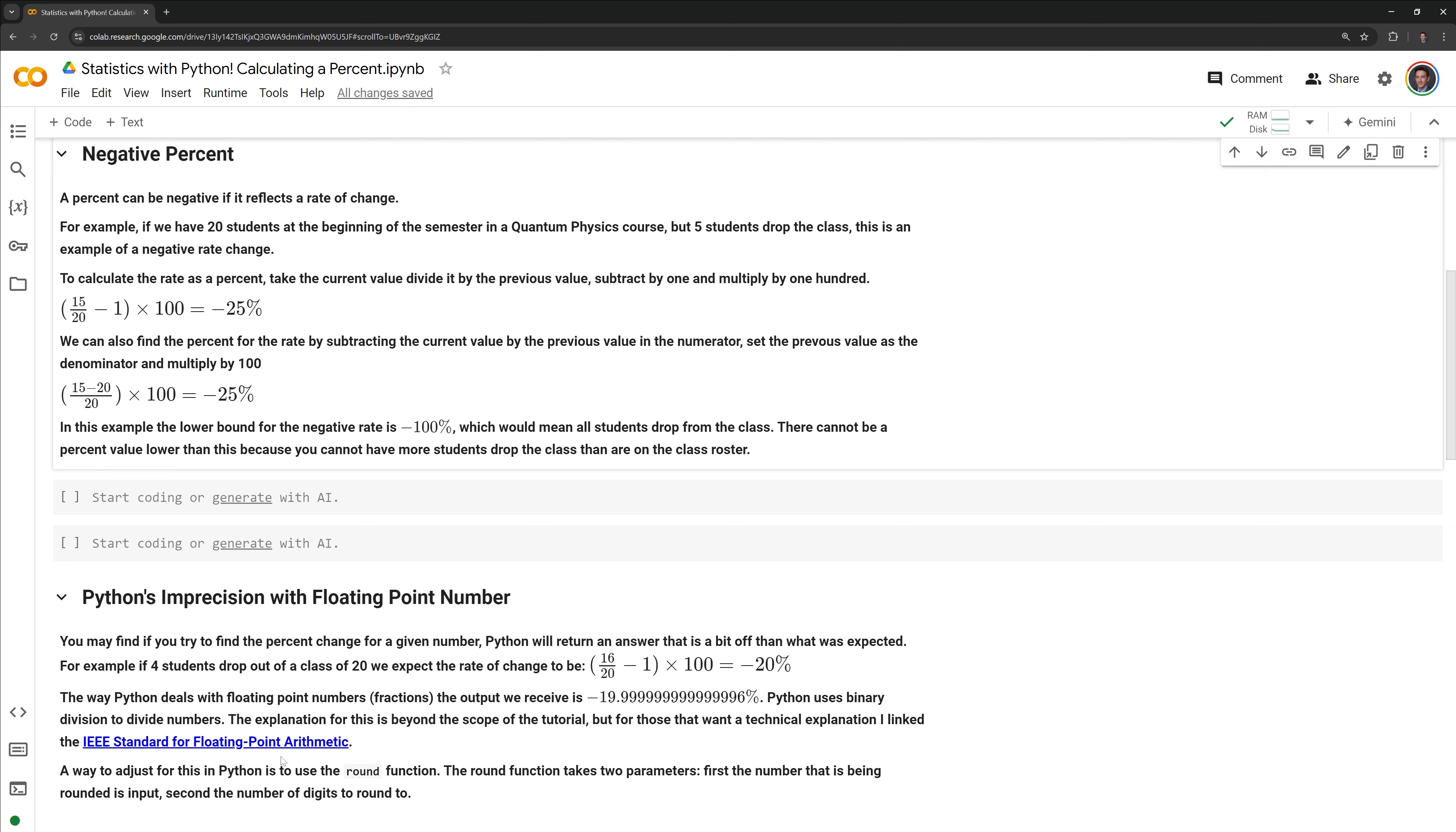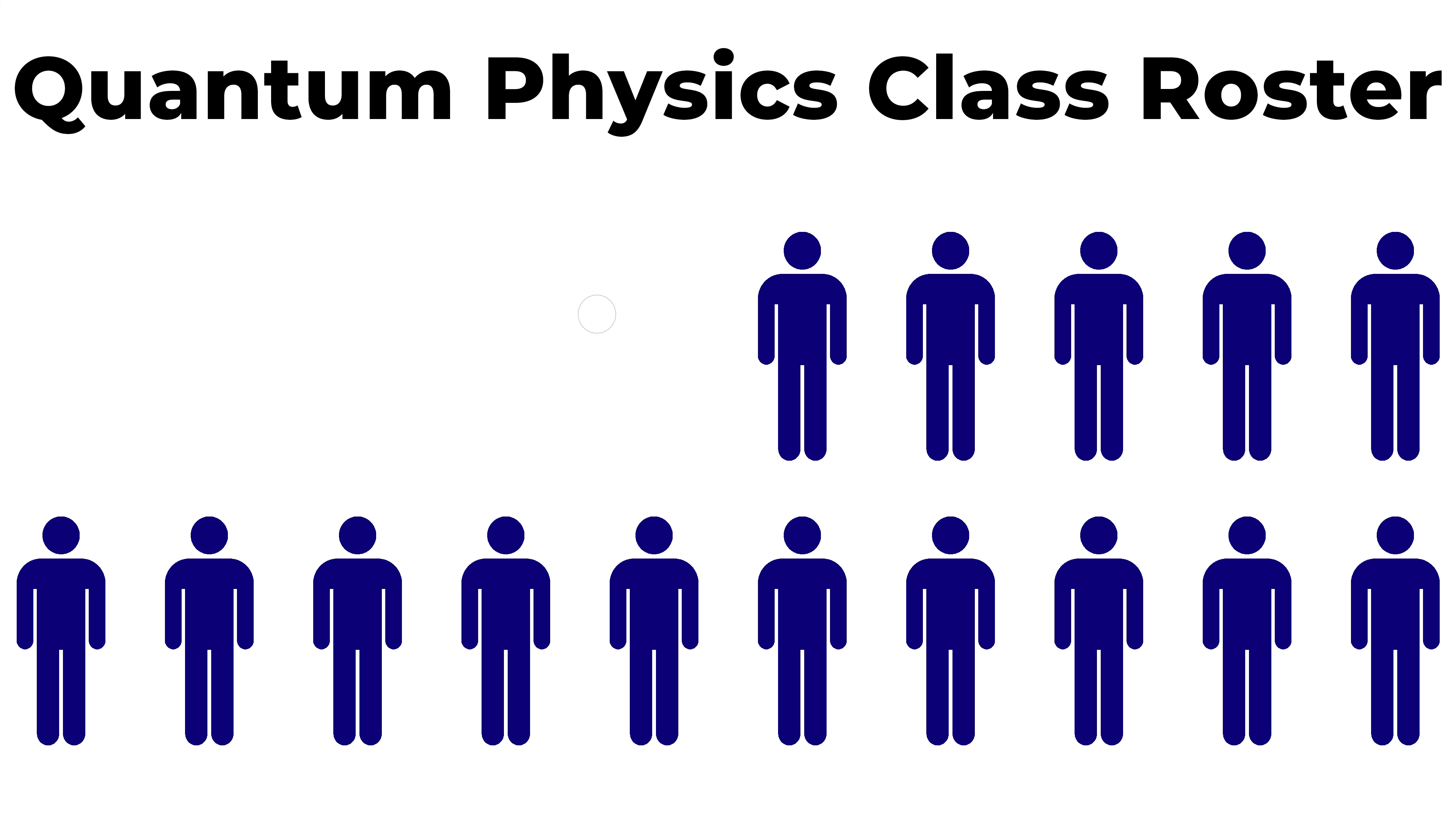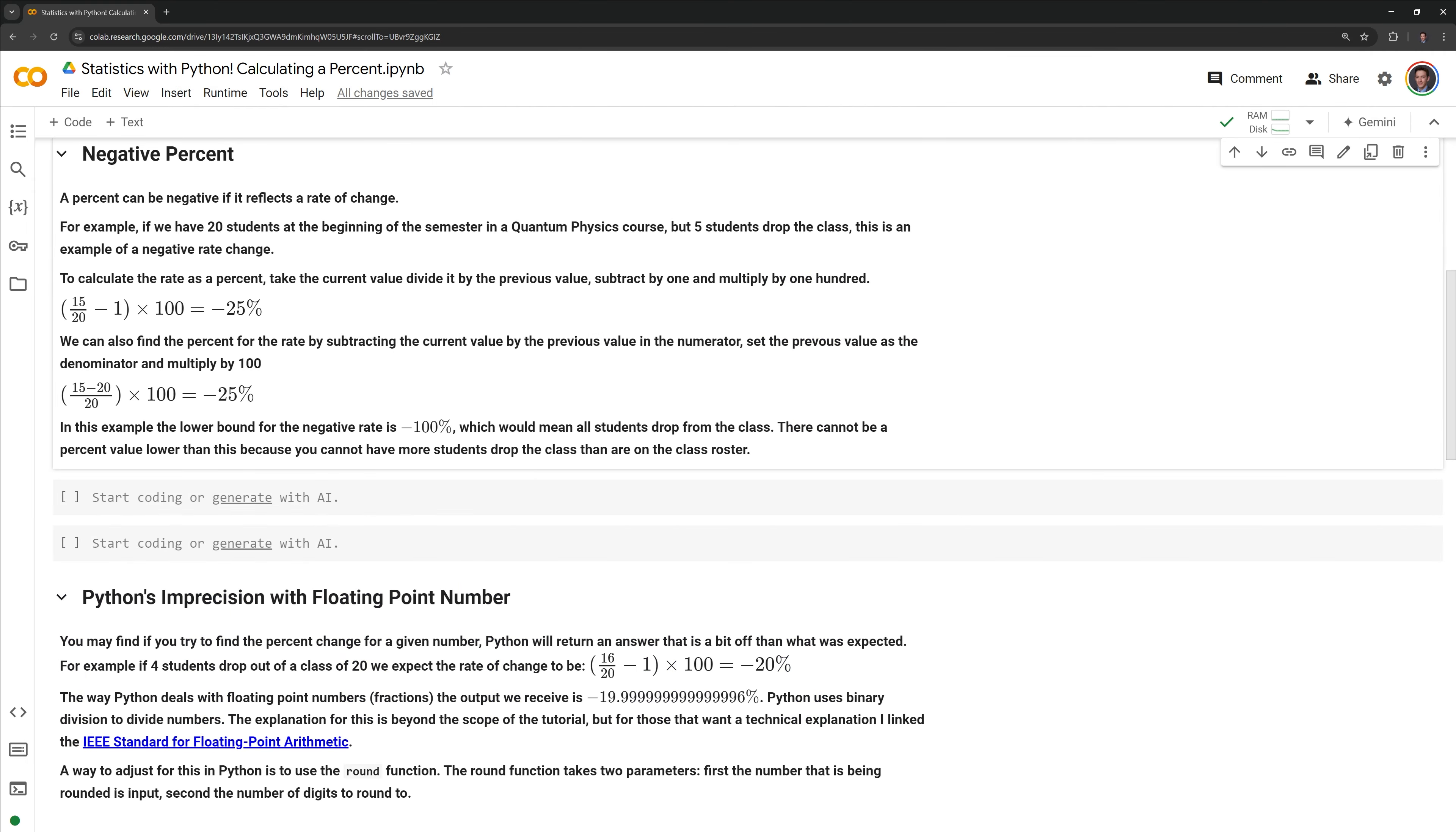A percent can be negative if it reflects a rate of change. For example, if we have 20 students at the beginning of the semester in a quantum physics course, but 5 students drop the class, this is an example of a negative rate change. We will calculate this within Python using two different methods.